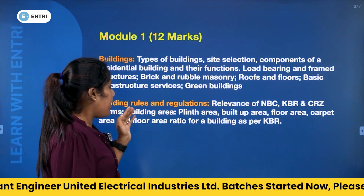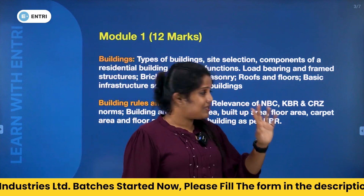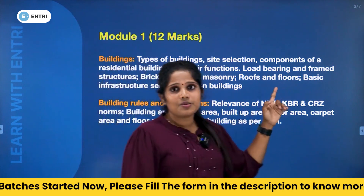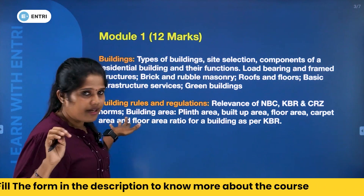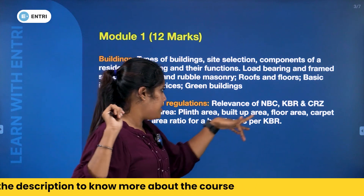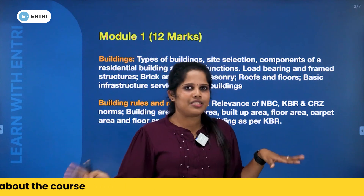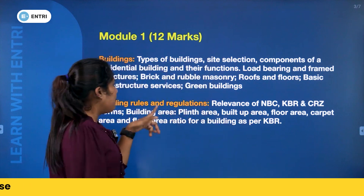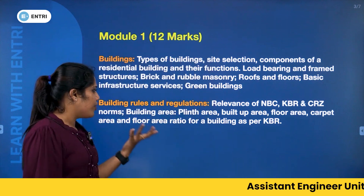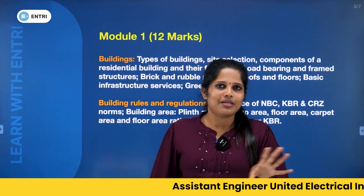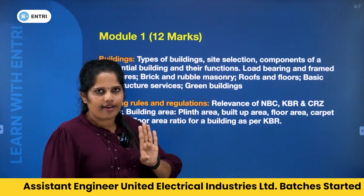Then Building Rules and Regulations — that is NBC (National Building Code) and KMBR (Kerala Municipal Building Rules), along with zonal regulations. Topics include building area, plinth area, built-up area, floor area, carpet area, and floor area ratio as per Kerala Municipal Building Rules.